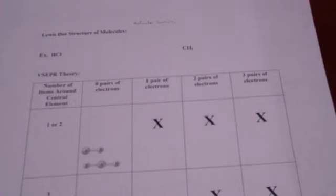Alright guys, so what I'm going to talk about in this video is molecular geometry, and specifically what we're talking about is covalent bonding. What I'm going to need to do first is teach you guys how to draw the Lewis dot structures for molecules, because we've already talked about drawing the Lewis dot structures for elements — now we're going to have to draw them for molecules.